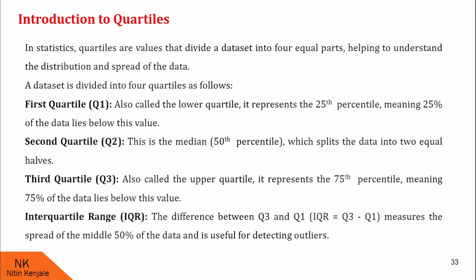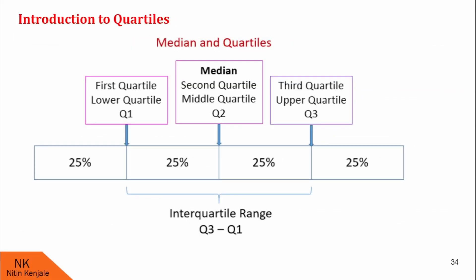Next, we see what is the interquartile range, also called IQR. It is the difference between Q3 and Q1, so IQR equals Q3 minus Q1. It measures the spread of the middle 50% of the data and is useful for detecting outliers. This chart will also help you understand quartiles: if this range represents 100% of the data, Q2 is the median below which 50% lies, Q1 is below which 25% lies, Q3 is below which 75% lies, and the interquartile range is Q3 minus Q1.